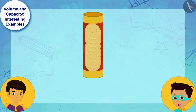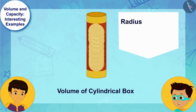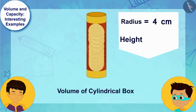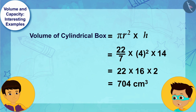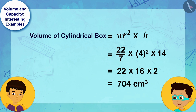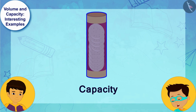Let us first find the volume of this cylindrical box. The radius of the box is 4 centimeters and the height of the box is 14 centimeters. On solving, we can see that the volume of the cylindrical box is 704 cubic centimeters.